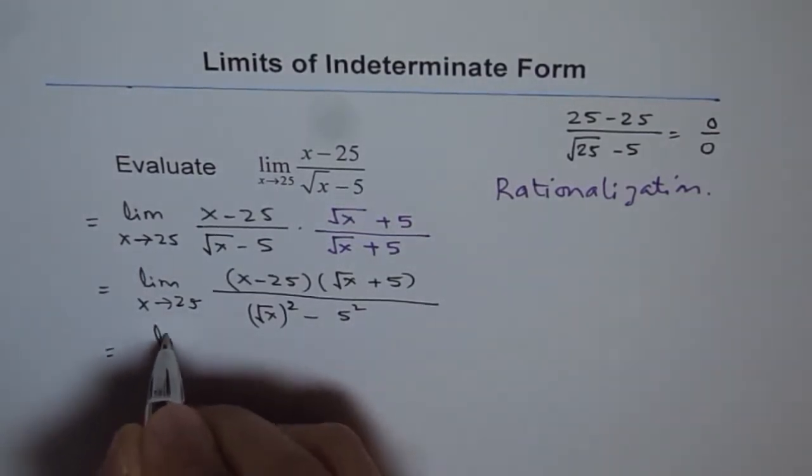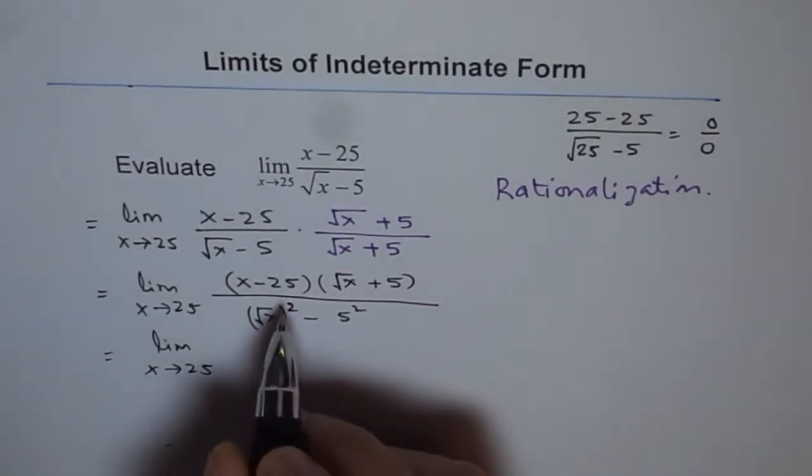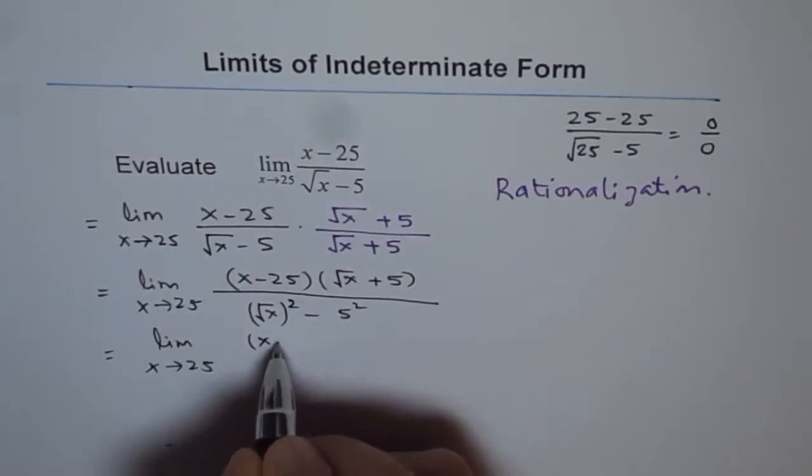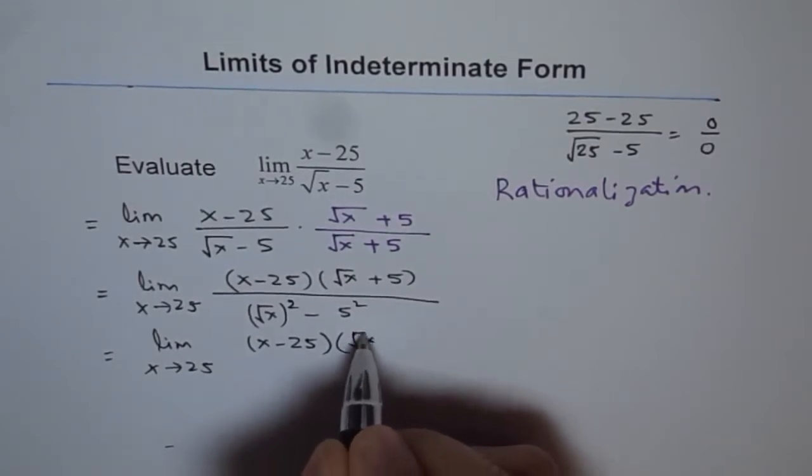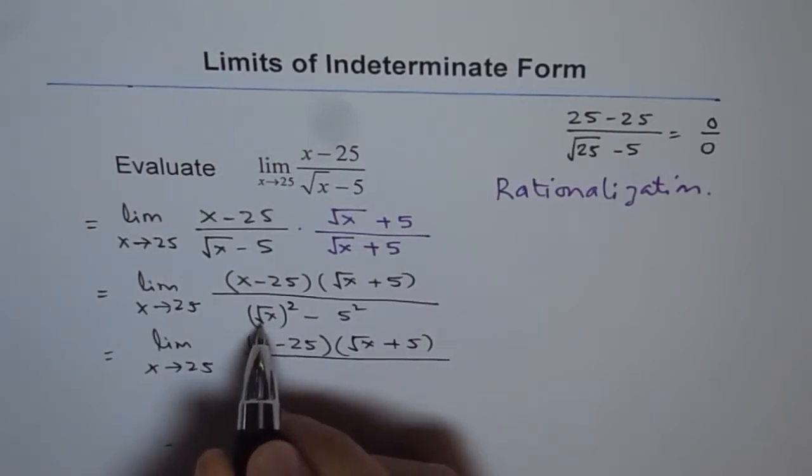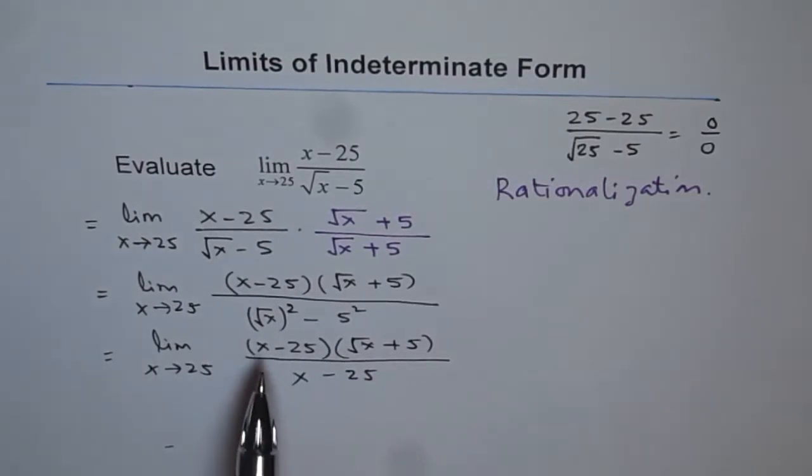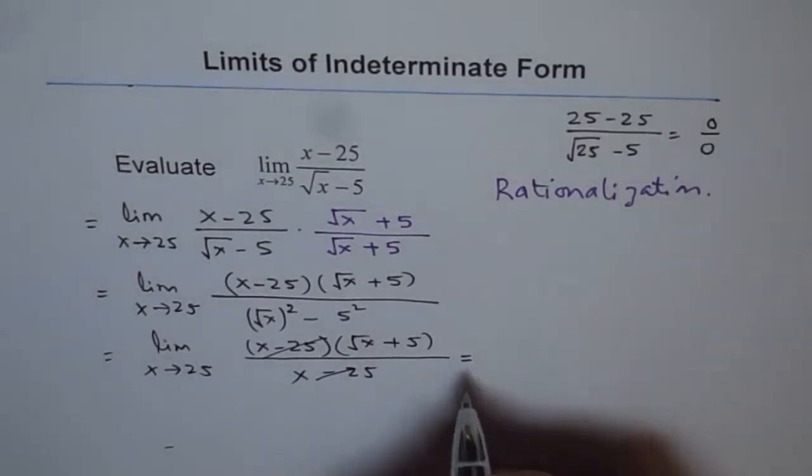Now we can write this as limit x approaches 25, and in the numerator, remember, if you are rationalizing denominator, do not expand numerator. Write it as such. So we have x minus 25 times square root x plus 5, and in the denominator, square root squared will give us x minus 25. So you see, x minus 25 is a factor in both numerator and denominator. And now it can be cancelled out.